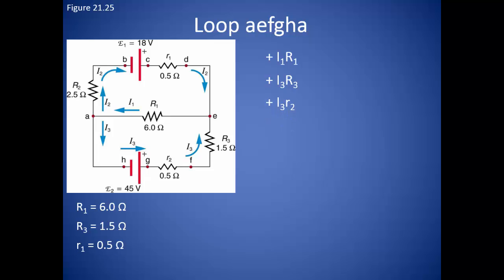This brings us to the internal resistance of battery 2. Again, since we are going against the current, we will have a positive change in potential going in that direction. And finally, to the second battery with its voltage of 45 volts. Notice we are moving from the positive terminal to the negative terminal, so the electromotive force will be negative in this case.